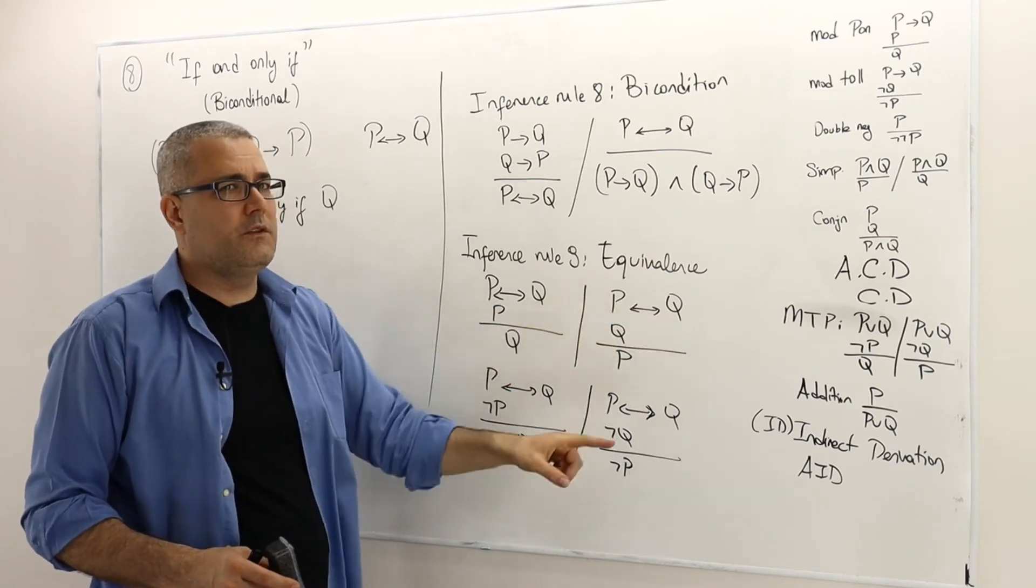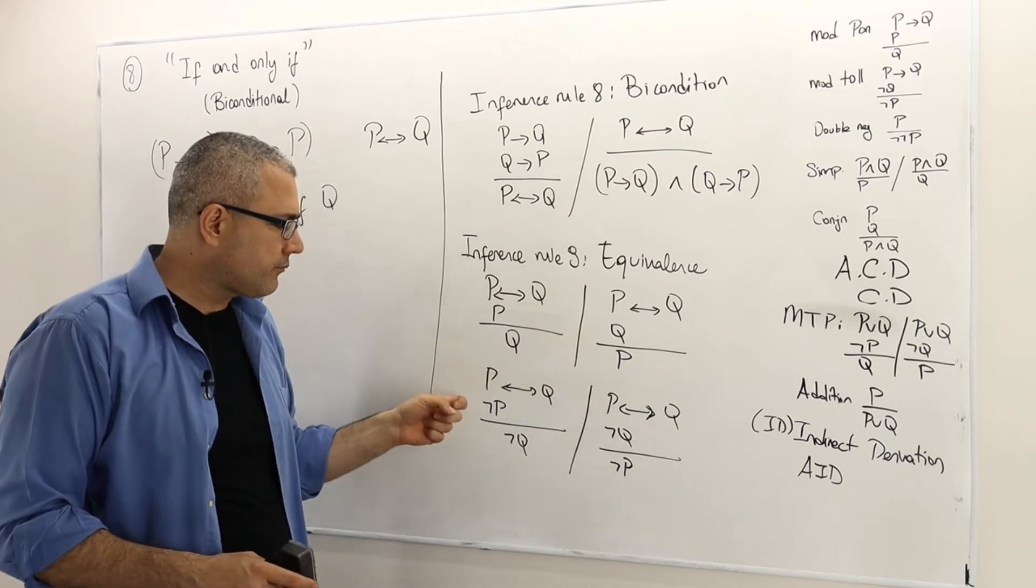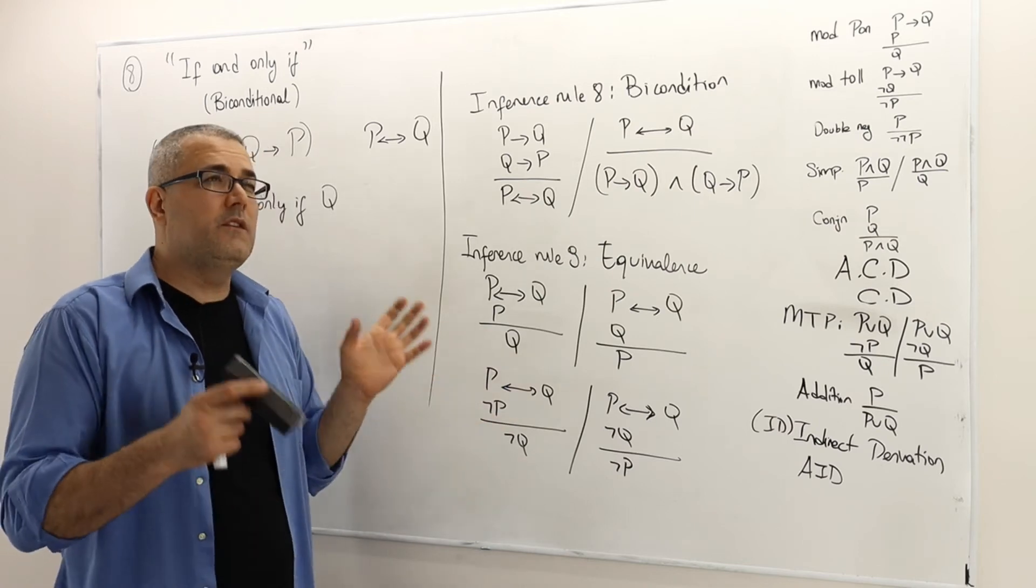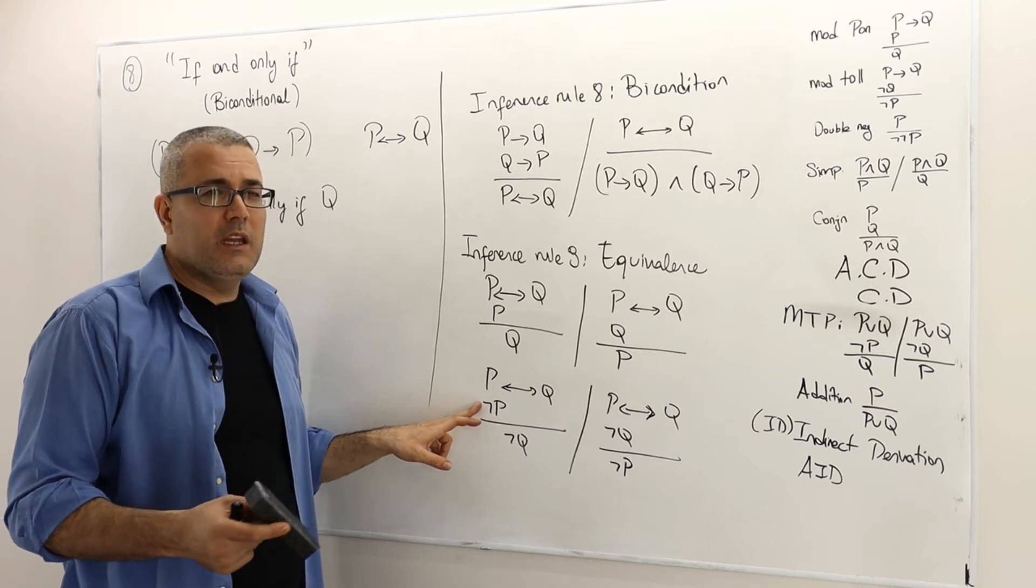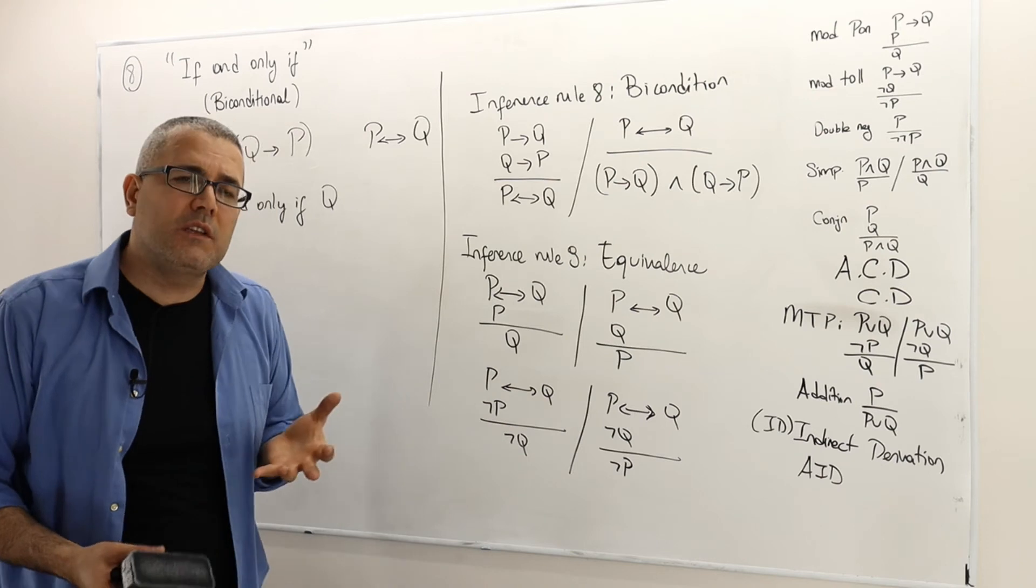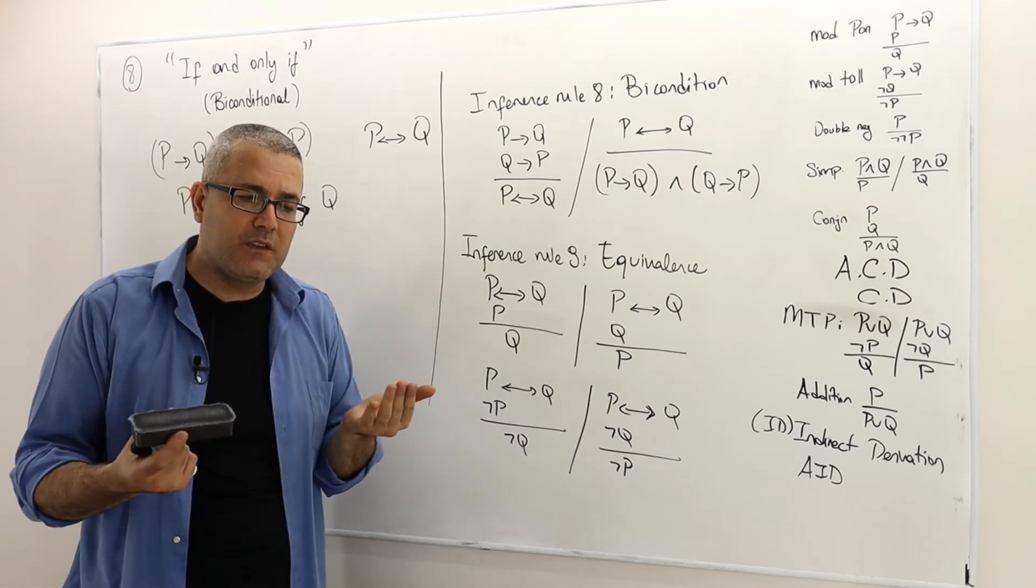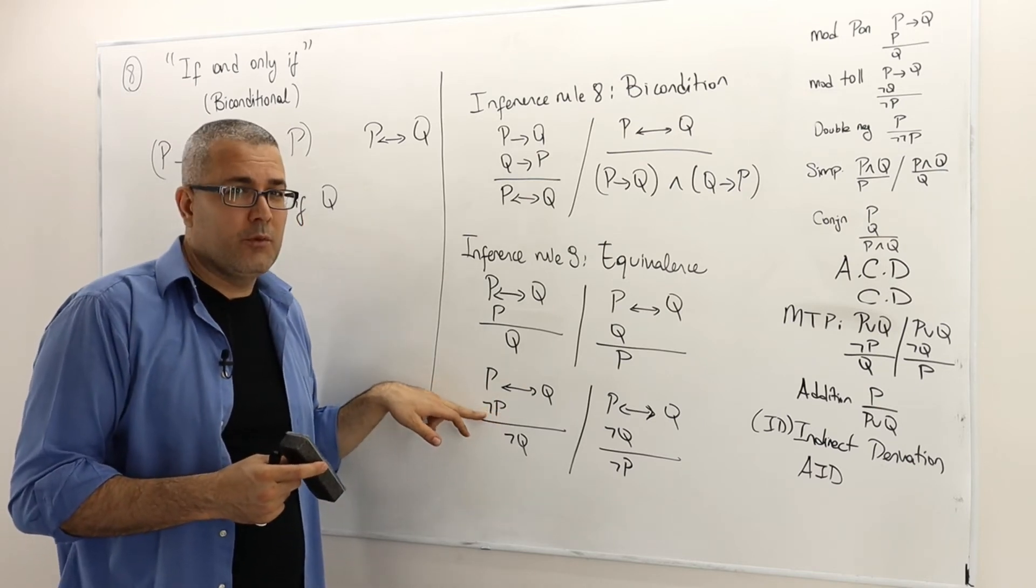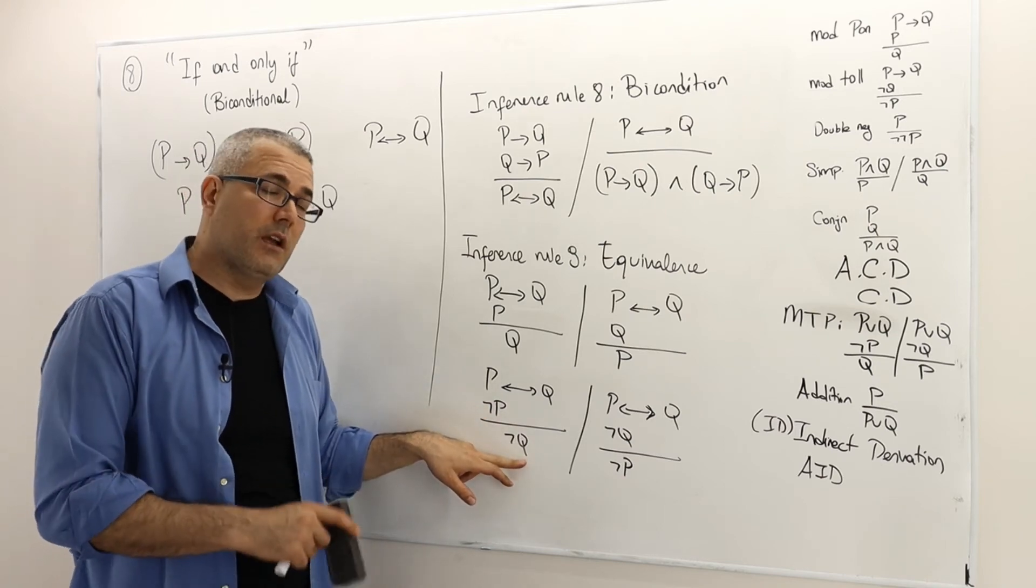Symmetrically, if p if and only if q is true and q is true statement, then p must be true. On the other hand, if p if and only if q is true, so p is equivalent to q and not p is true, meaning p is false, so q must be false. Remember, equivalence in logical language means the truth values of two sentences are the same. So if p is false, not p true being p is false, then q must be false. So therefore, not q must be true.